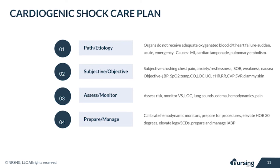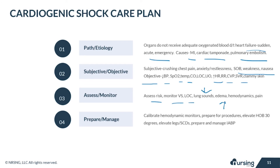Quick review: Cardiogenic shock occurs when organs do not receive adequate oxygenated blood due to acute heart failure — it is a medical emergency. Causes include MI, cardiac tamponade, and pulmonary embolism. Subjective data includes crushing chest pain, anxiety, restlessness, shortness of breath, weakness, and nausea. Objective data includes decreased BP, oxygen saturation, temperature, cardiac output, and level of consciousness, plus increased heart rate, respiratory rate, and CVP. Key nursing interventions: assess risk, monitor vital signs, LOC, lung sounds, edema, hemodynamics, and pain. Calibrate hemodynamic monitors, prepare for procedures, elevate the head greater than 30 degrees, elevate legs and apply SCDs, and prepare and manage the intra-aortic balloon pump.